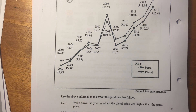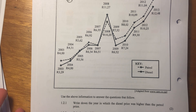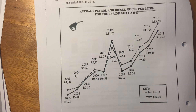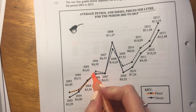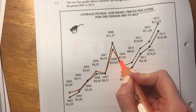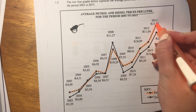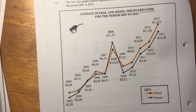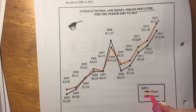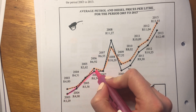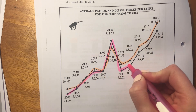Use the above information to answer the questions that follow. Question 1.2.1: Write down the year in which the diesel price was higher than the petrol price. Firstly, let's make sure that we understand the difference. So the petrol is the dotted one — I'm marking that in this color so we know which one is petrol. The other one is then the diesel. You can color it in if you want.